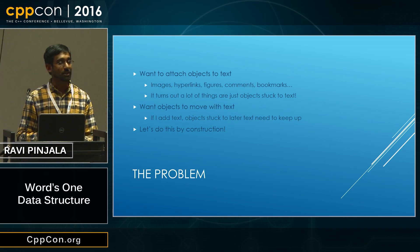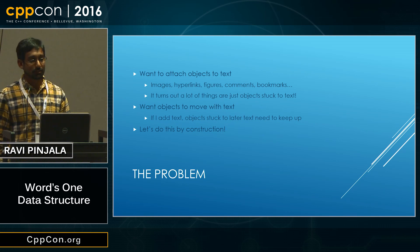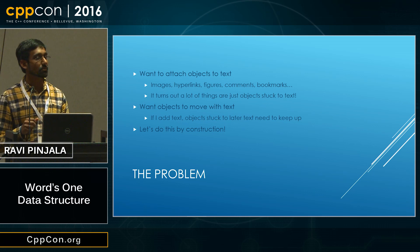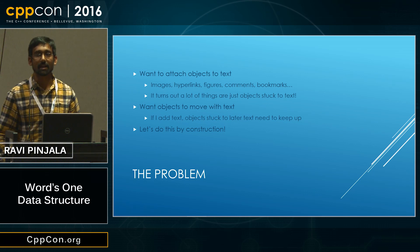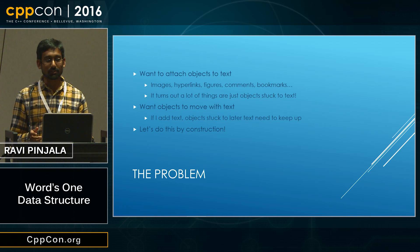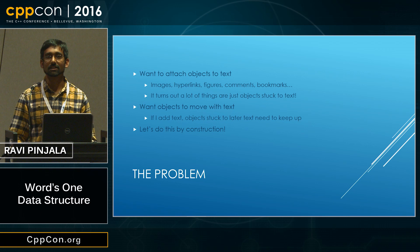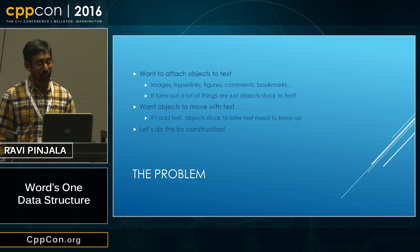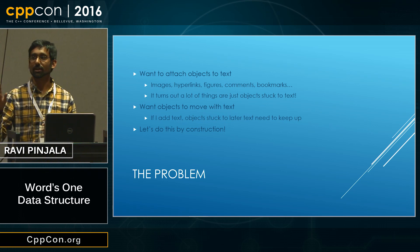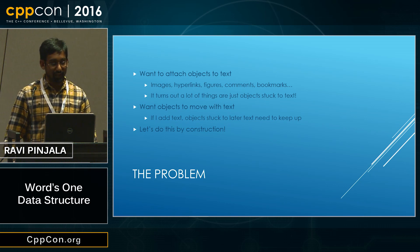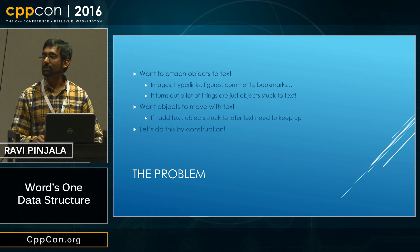So let's talk about the problem that we're trying to solve. We want to take arbitrary objects and attach them to a stream of text. Objects could be images, pictures, comments — basically anything you could think of that you might want to attach to a document. It turns out that you can implement just about any feature in a word processor by sticking objects to text and having them stay there. And we want the objects to move around with text, so if I'm typing, everything else that's later in the document should actually move along with me and not shift around.